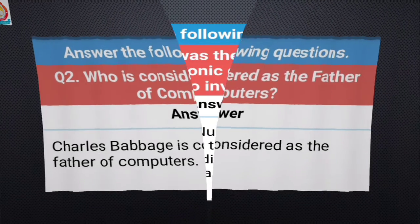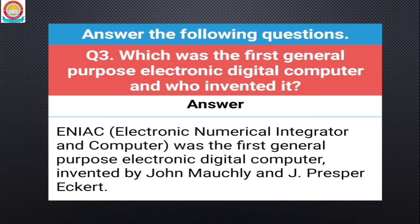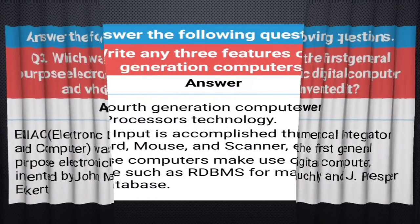Our next question is: which was the first general-purpose electronic digital computer and who invented it? ENIAC — Electronic Numerical Integrator and Computer — was the first general-purpose electronic digital computer, invented by John Mauchly and J. Presper Eckert.